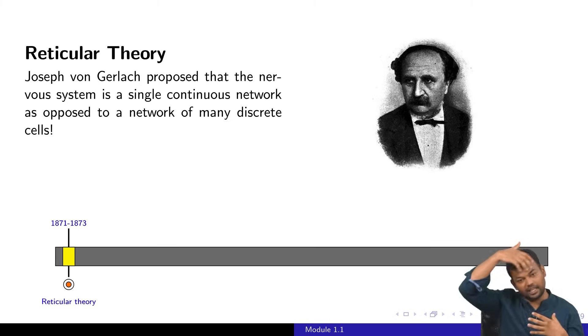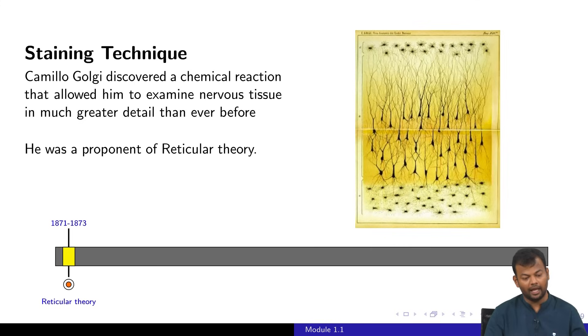Around the same time, there was a breakthrough in staining techniques where Camilo Golgi discovered a chemical reaction that would allow you to examine the neurons or nervous tissue. By looking at the nervous tissue using this staining technique, as you see in the figure on the right, he also concluded that this is just one single cell and not a network of discrete cells. He was again a proponent of reticular theory.